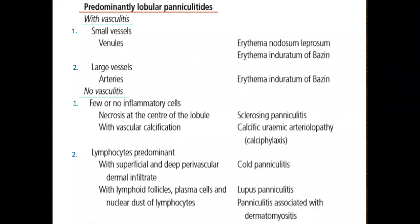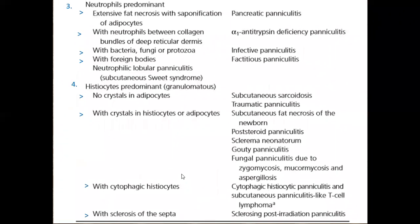In those paniculitis with little or no inflammation, we include sclerosing paniculitis and calciphylaxis. In those with lymphocytic predominance, it is mainly those associated with autoimmune pathology like dermatomyositis and lupus erythematosus, and also cold paniculitis. Those with predominant neutrophils are mainly enzymatic paniculitis, alpha-1 antitrypsin deficiency, and the factitious and infectious types. Those with histiocytes — granulomatous or non-granulomatous — include subcutaneous sarcoidosis, subcutaneous fat necrosis of newborn, and sclerema neonatorum.